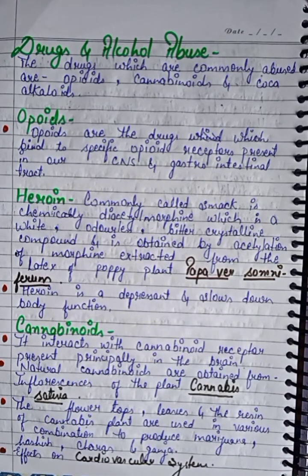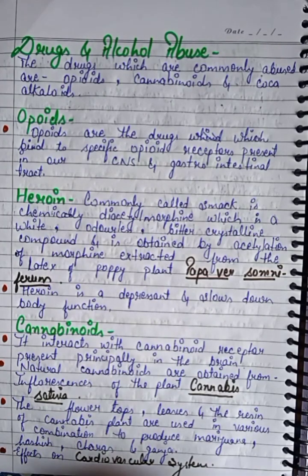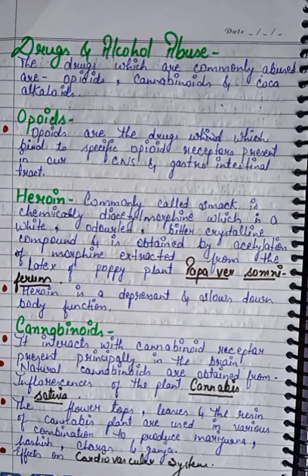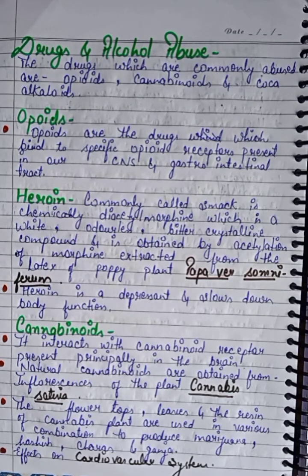Hello friends, welcome back to my channel Biologic Kingdom. We are doing Chapter: Human Health and Disease. In the last video we discussed the immune system, AIDS, its prevention and control, and cancer treatment. Today we will cover drugs and alcohol abuse. The drugs which are commonly abused are opioids, cannabinoids, and coca alkaloids.